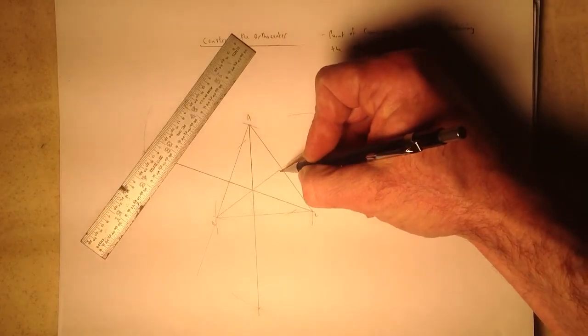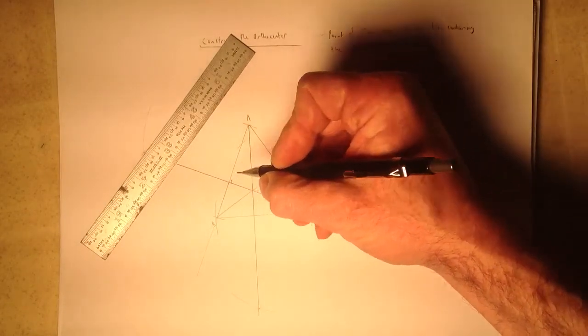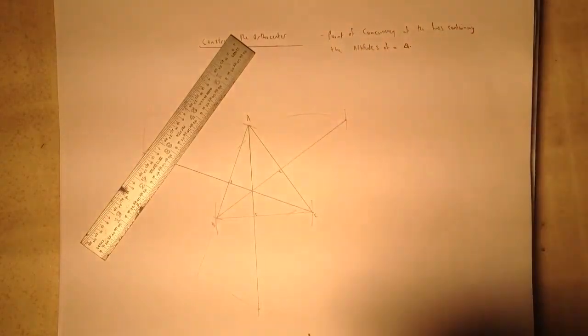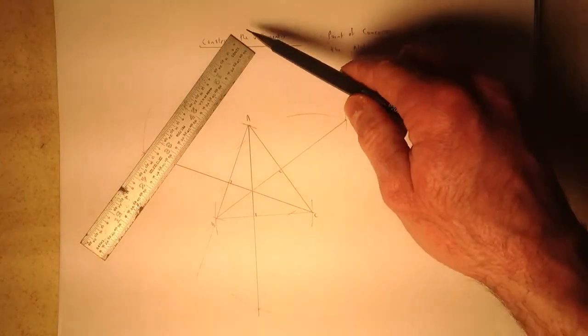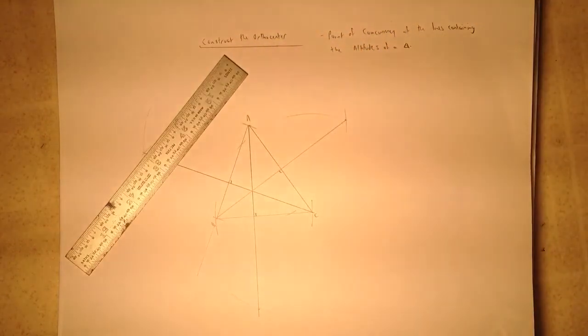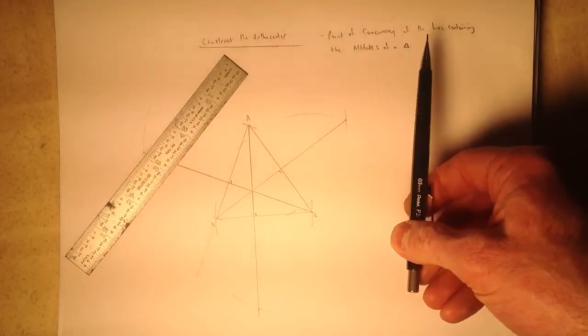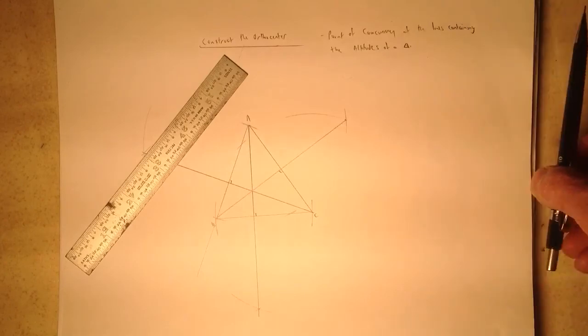Each of these we can be sure now are perpendicular. And the orthocenter lies there, the point of concurrency where the three of them meet. And that is the construction of the orthocenter, having constructed one by one the three altitudes of the triangle.